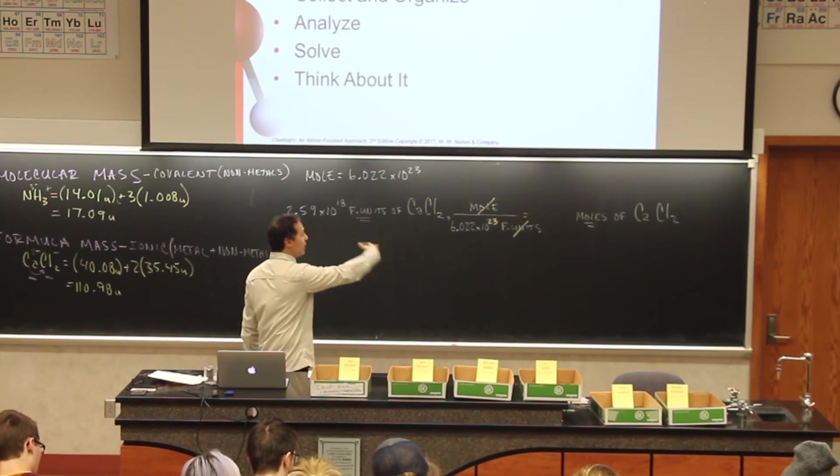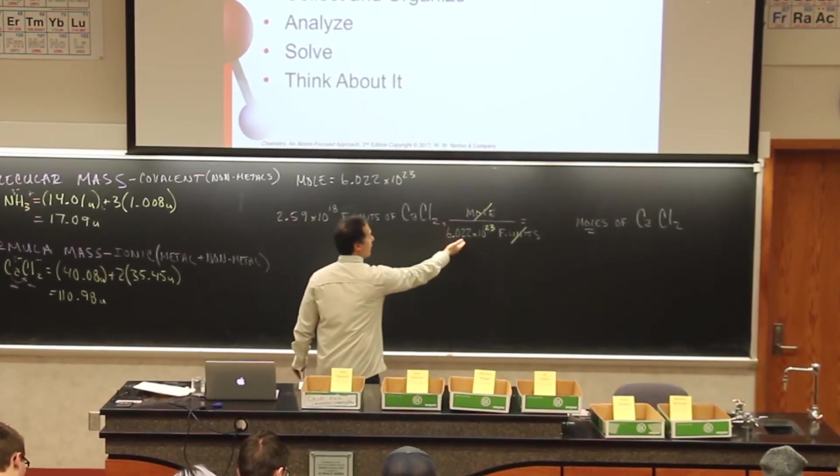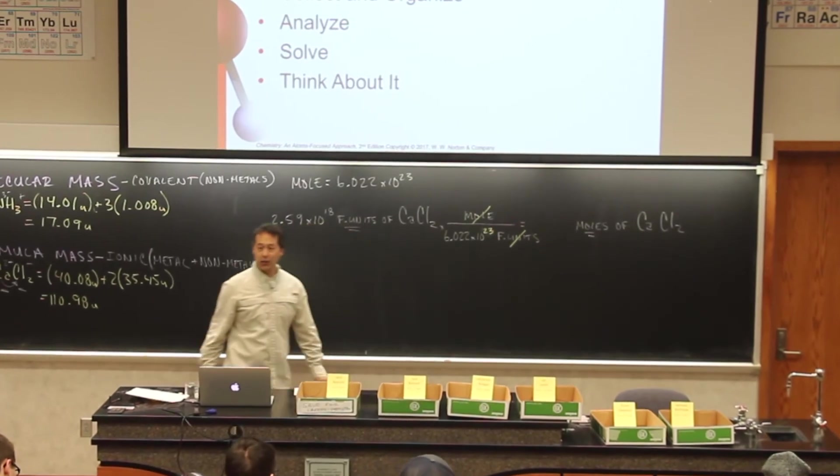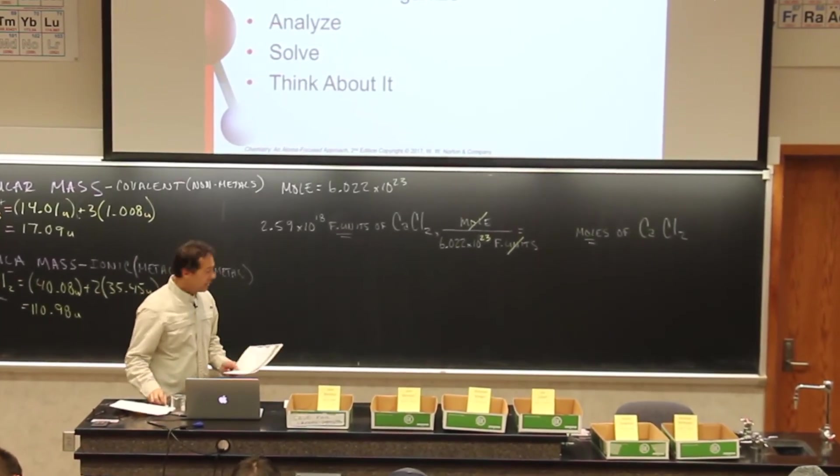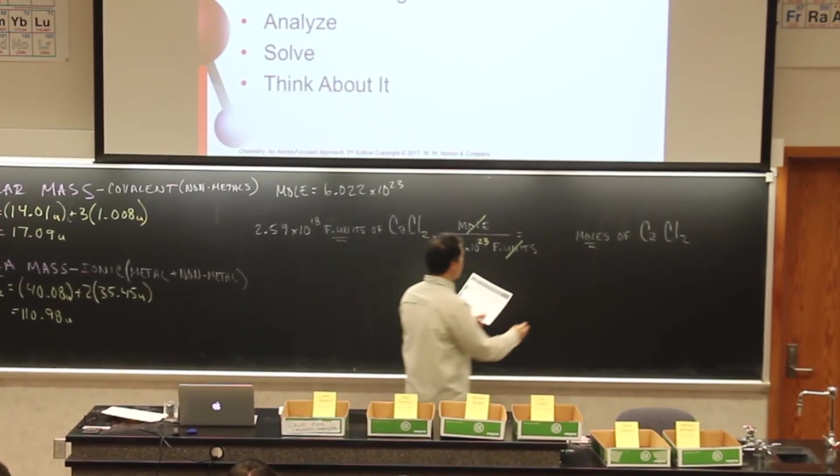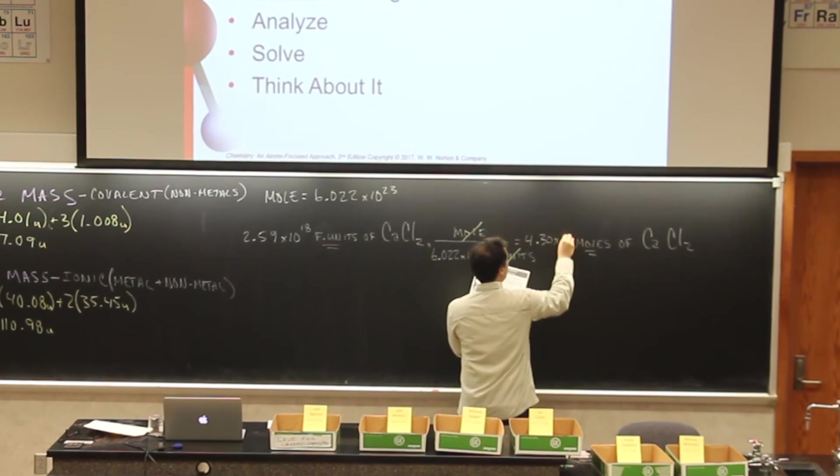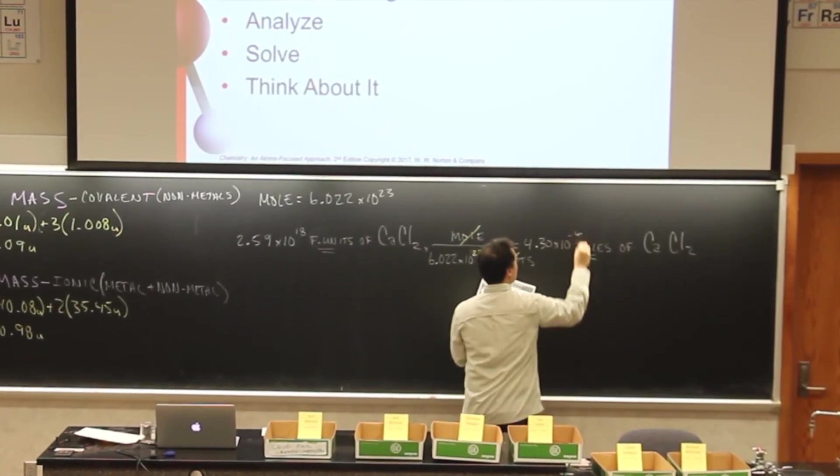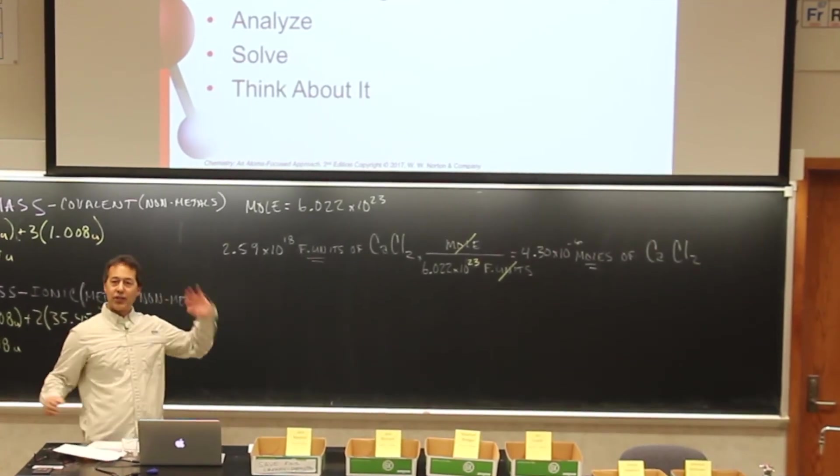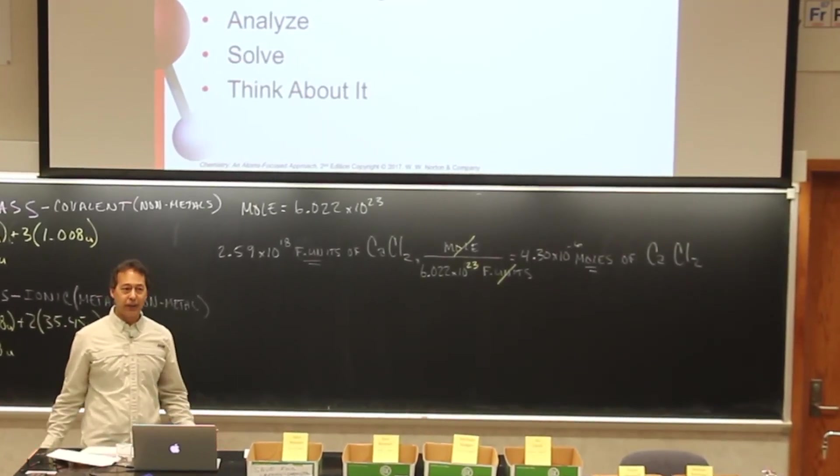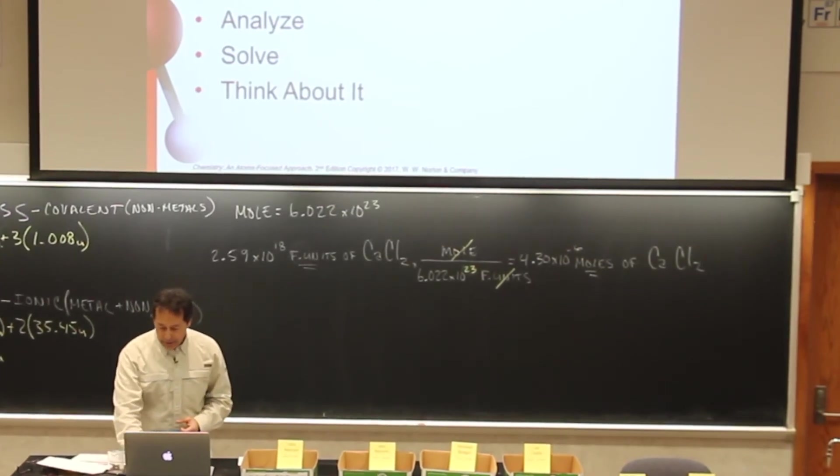So now, if I did this correctly, my units cancel out, and it's just taking this number, dividing it by Avogadro's number. And when I do that, I end up with some number. I came up with 4.30 times 10 to the negative 6 moles of calcium chloride. And I pat myself on the back, and I'm feeling pretty good. Got this.